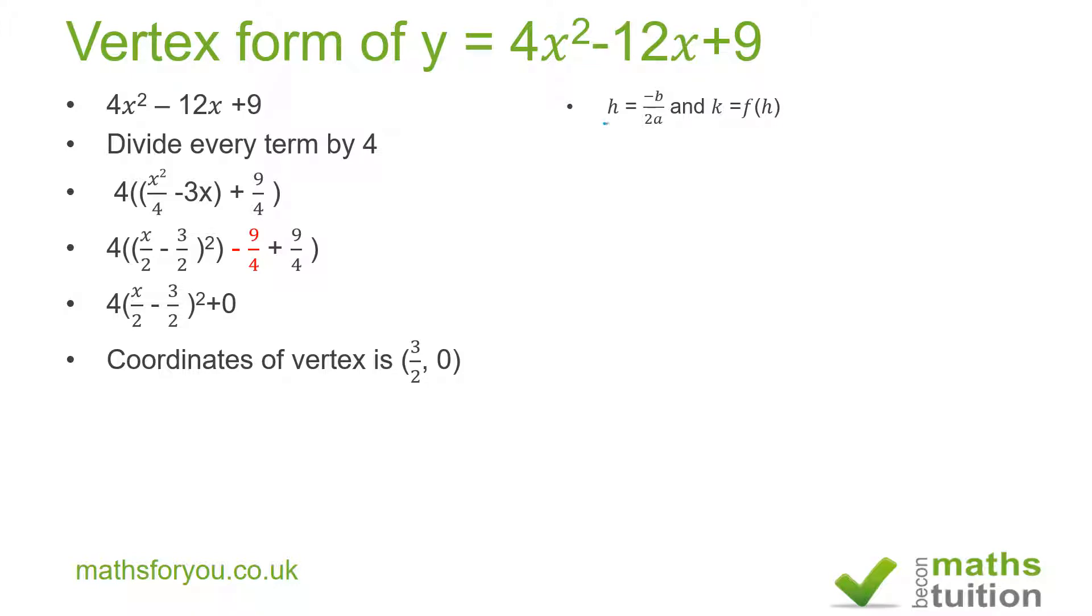Now where h in this case is the x-coordinate at the vertex, and k is the y-coordinate at the vertex. In this instance, b is the coefficient of x. This is going to be -12, not just 12.